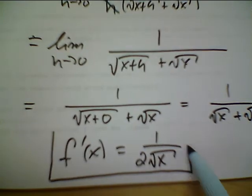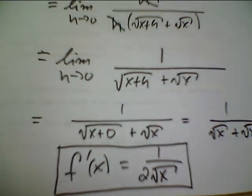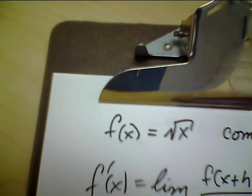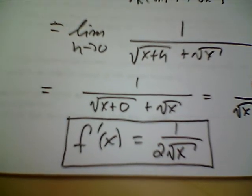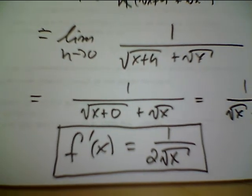And, you can just leave it in that form for now. You don't have to rationalize the denominator. So, if f of x is the square root of x, then f prime of x is 1 over 2 root x. Okay. Good luck.